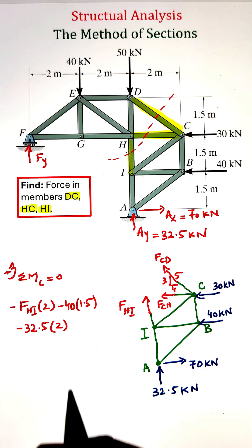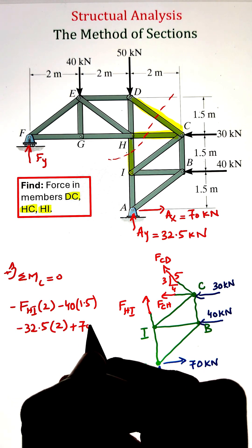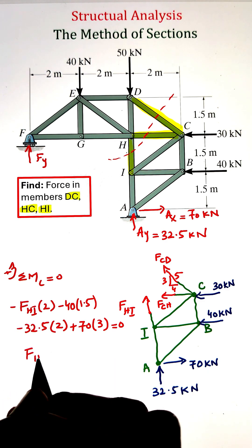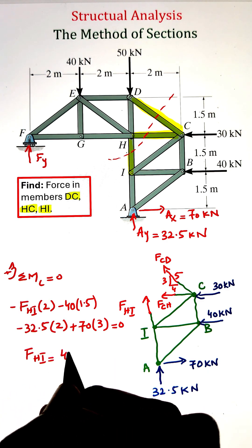The only unknown force that is going to create a moment with respect to point C is the force in member HI, which can be calculated from this expression. It is coming to 42.5 kilonewtons.